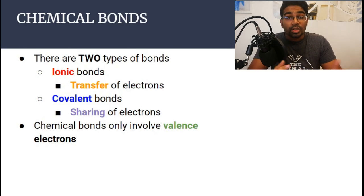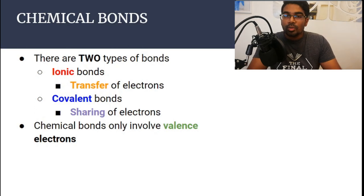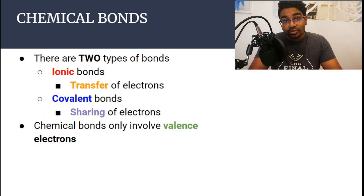Now we know what chemical bonds are. The next question to ask is: why do chemical bonds form? What is the purpose of this movement of electrons?